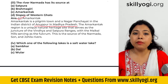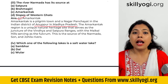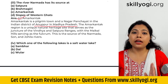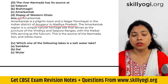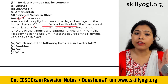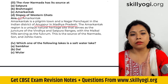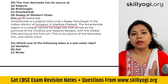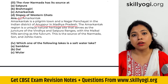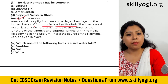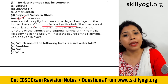Except for these two rivers, all other peninsular rivers flow from the western part of the peninsula to the eastern part, draining into the Bay of Bengal.